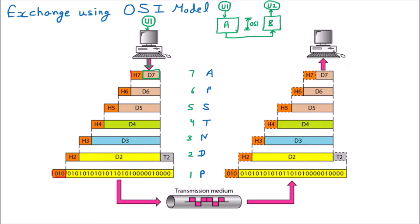When the data reaches the application layer, the application layer attaches its header. There are two parts of the data: the actual data - for example, any message I want to transmit to you - and the header. The header contains the information of sender and receiver. Think of it like a postcard - something is written inside.